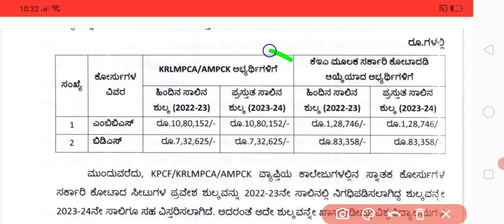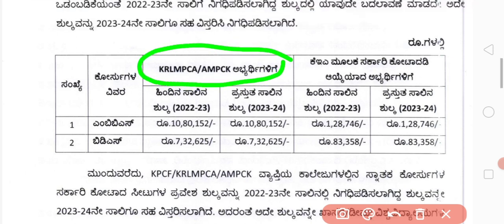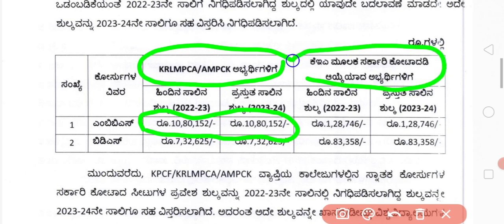Next, here is KRLMPCA — meaning this is for religious and linguistic minority college candidates. For a private seat, the MBBS fee per year is 10,80,152, and this year it remains the same as last year — no change. And for the government seat in linguistic and religious minority colleges, the fee also remains the same at 1,28,746.